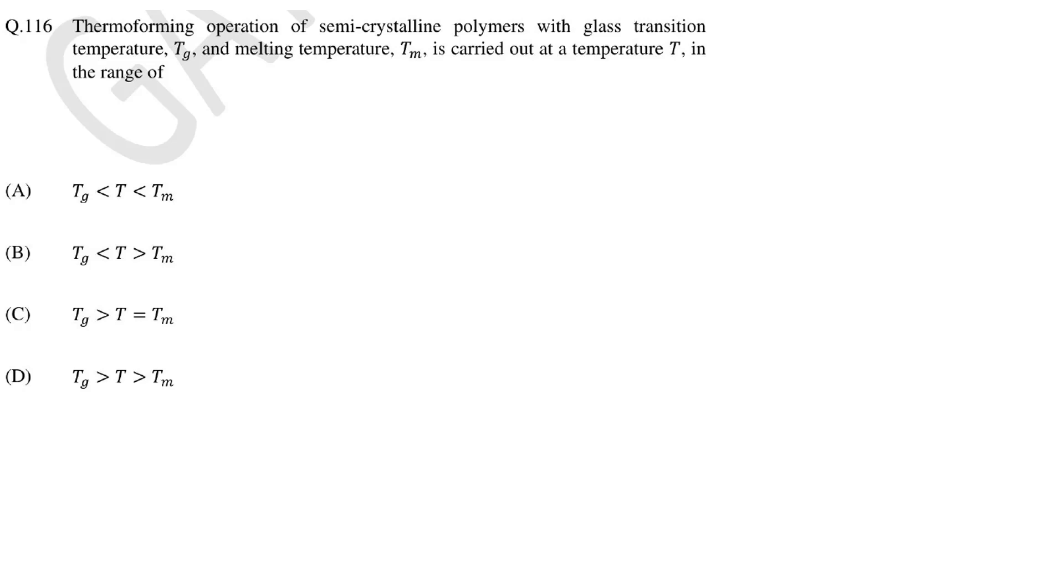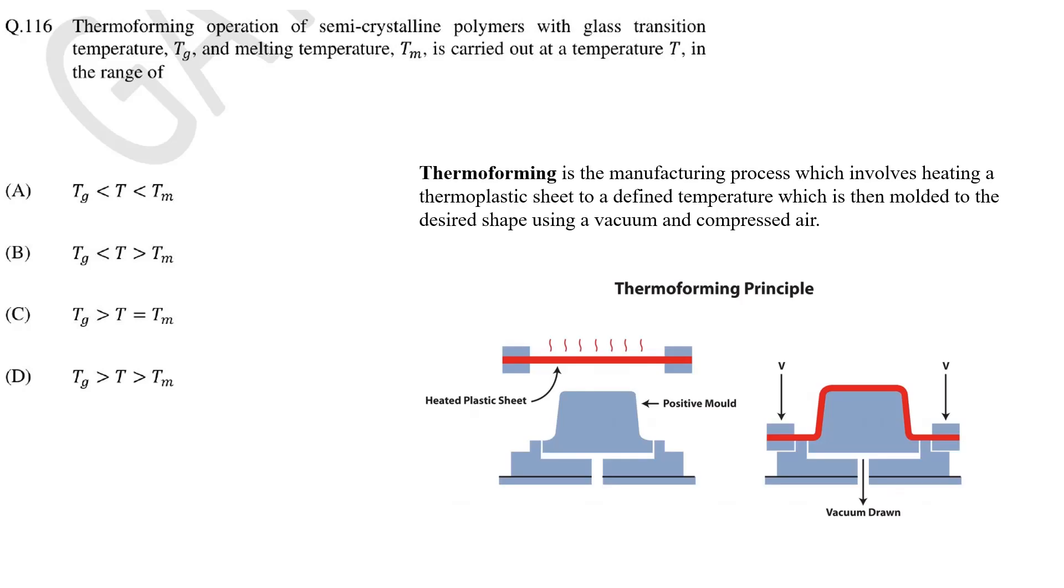In this question we need to find the temperature range in which thermoforming operation is performed. Is it above Tg and Tm, below Tg and Tm or in between? Thermoforming is a process where plastic sheets are molded into a product. To make plastic product, sheets are first heated so that the sheet become flexible and stretchable enough to take the shape of the mold. That means the temperature is higher than Tg because below Tg polymers are glassy and it will break if stretched. It also must be below Tm because at or above Tm plastic sheets start to melt and it won't be able to hold the shape. So the correct answer is above Tg and below Tm.